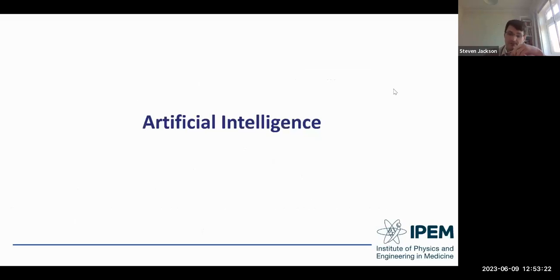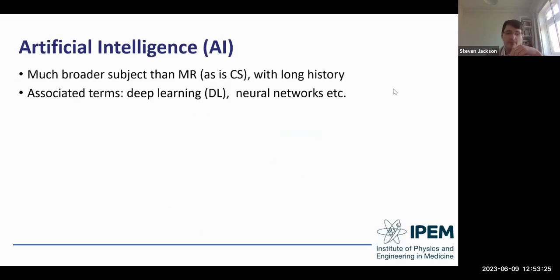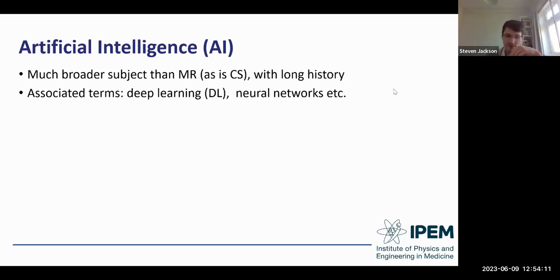Moving on to artificial intelligence — a much broader subject, and one that's been in the news recently. It's only within the last two to three years that these technologies have become commonplace on scanners in district generals rather than only in research centres. There's associated terminology — deep learning, neural networks, etc. Each manufacturer implementation will fit best into a certain AI category, but at this overview level we'll refer to all of these under the AI umbrella, even though some aren't strictly AI by the strictest definition.